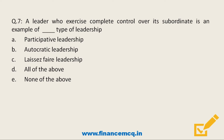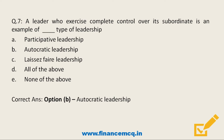Next question: a leader who exercises complete control over subordinates is an example of which type of leadership? Option A: participative leadership. Option B: autocratic leadership. Option C: laissez-faire leadership. Option D: all of the above. The correct answer is Option B — autocratic leadership. Participative leadership is also known as democratic leadership, where everyone is encouraged to participate and implement decisions.